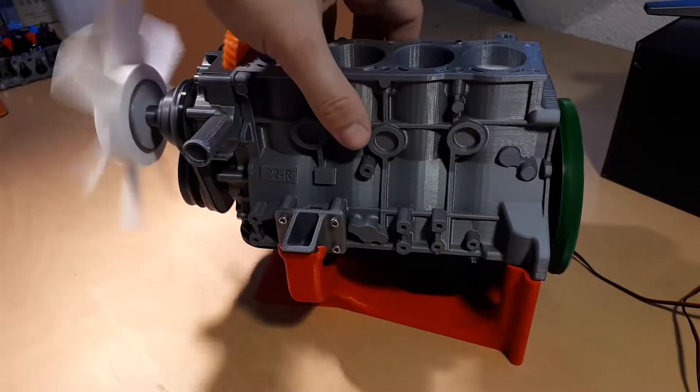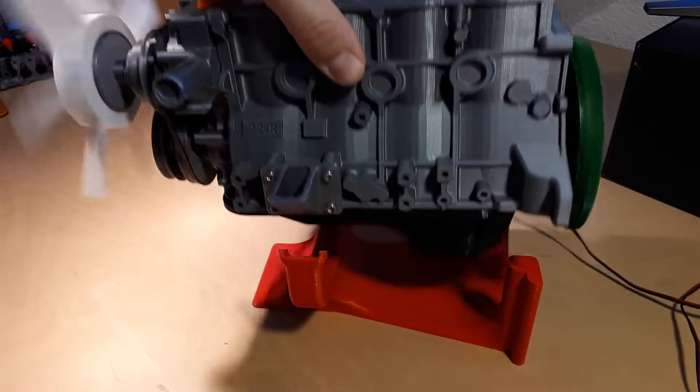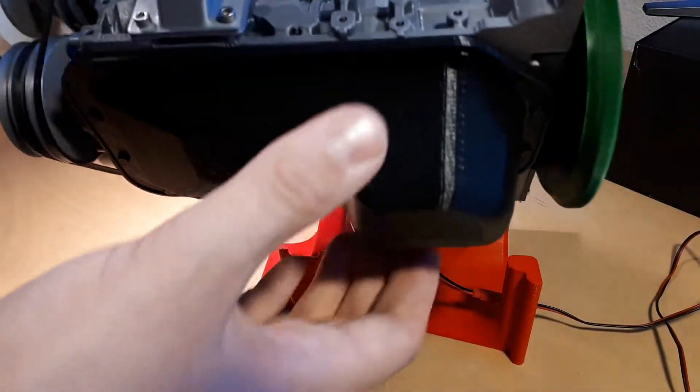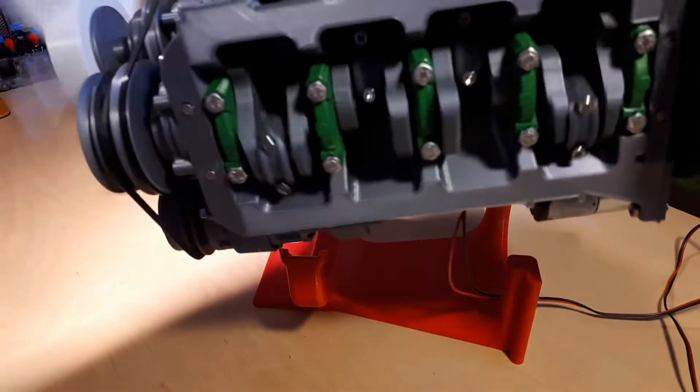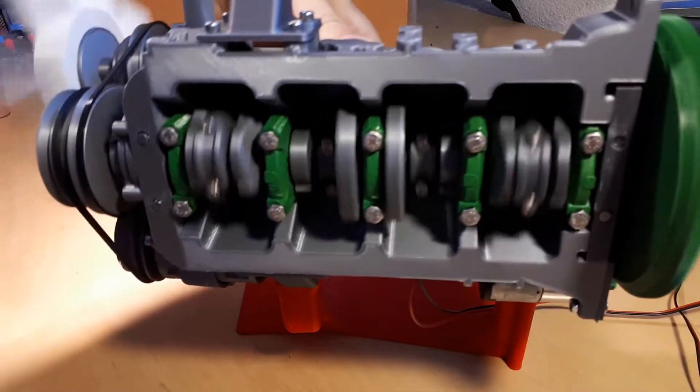The engine block is the base for the whole assembly. Be careful with bearing assembly as it will affect how the crankshaft will rotate when finally assembled.